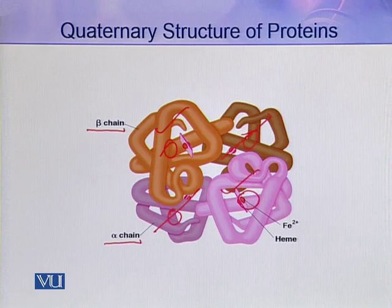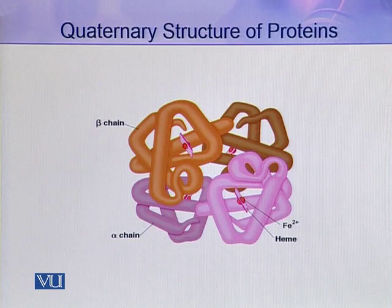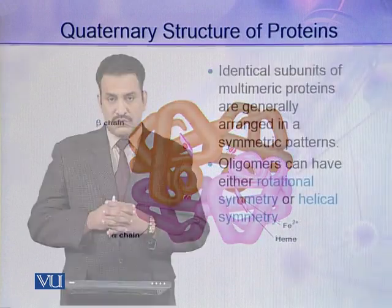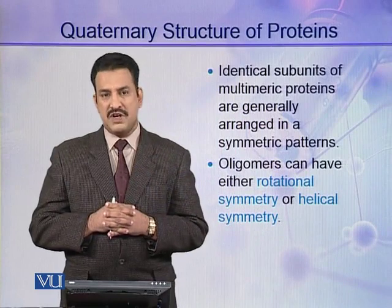Some scientists say that if two or more subunits are identical, those identical subunits are regarded as a single protomer. In that case, you can say hemoglobin is a dimer. This is its quaternary level of organization. Identical subunits of multimeric proteins are generally arranged in a symmetric pattern.